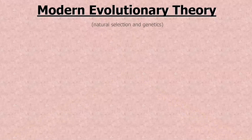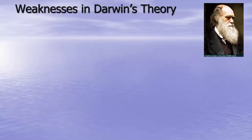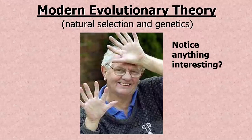This is a person with an extra finger on each hand. That is obviously caused by a mutation. And in certain environments a mutation is bad, but in certain environments a mutation could be good and helpful. It depends on the environment.